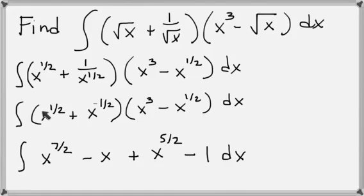So when I go to foil it out, I have first times first is x to the 1 half times x to the 3rd. And so if I multiply like bases, I would add the exponents together. So 3 plus 1 half is 3 and 1 half, which as an improper fraction is 7 halves.